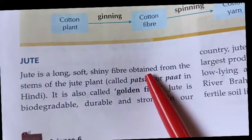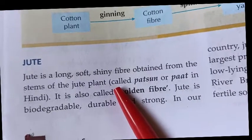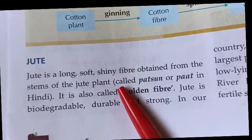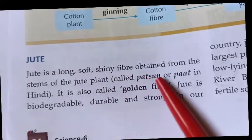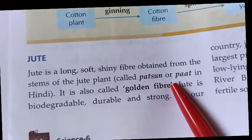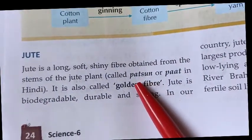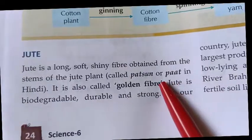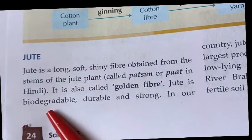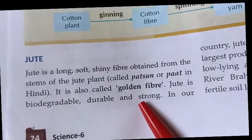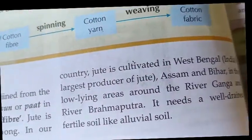Jute is a long, soft, shiny fiber obtained from the stem of the jute plant. It is a plant fiber, also called patson or pat in Hindi. It is also called the golden fiber. Jute is a natural fiber that is biodegradable, durable, and very strong.